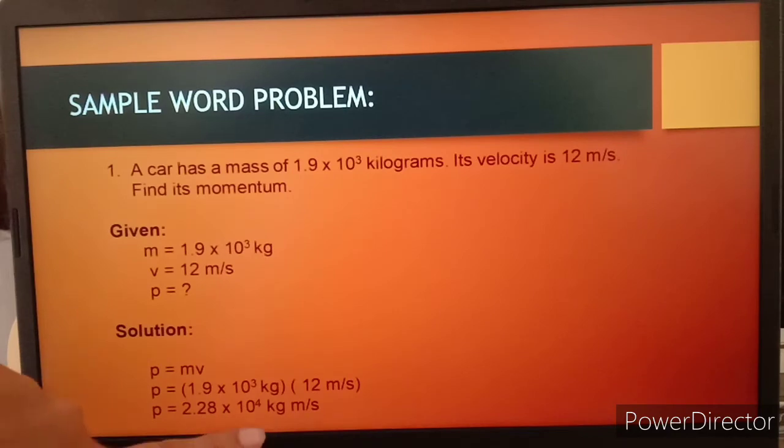This is the final answer. Don't forget to include the units. The unit when finding momentum is kilogram meter per second. Since we're just going to multiply the values here, the units also get multiplied together. So we have kilogram meter per second.